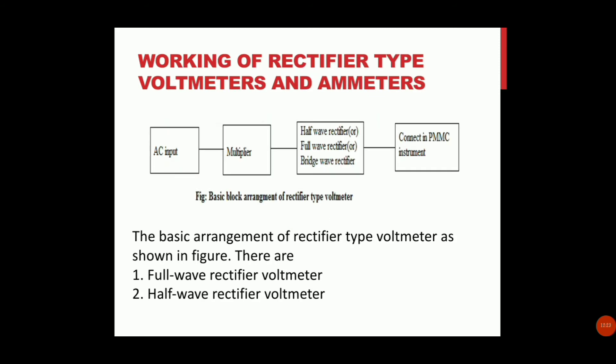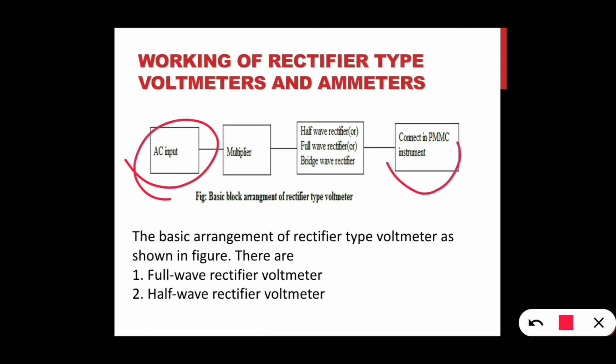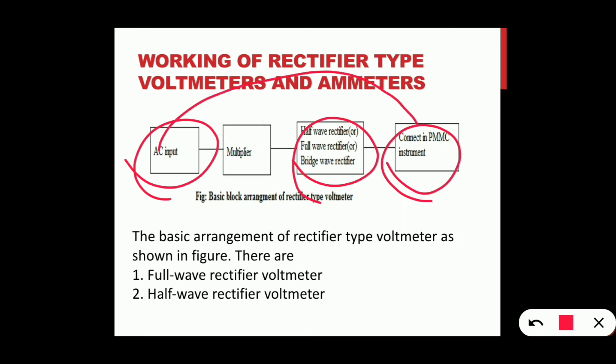Rectifier type voltmeter. AC input is given to a PMMC instrument, which is a DC ammeter. There are two types of rectifiers: half-wave rectifiers and bridge (full-wave) rectifiers. The diode converts alternating current to DC current.